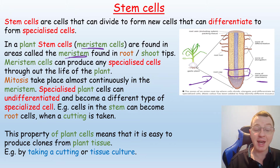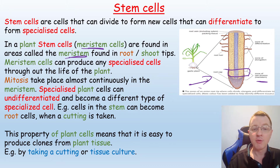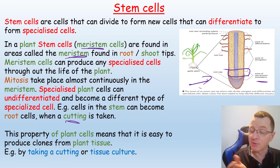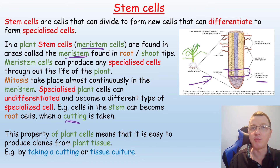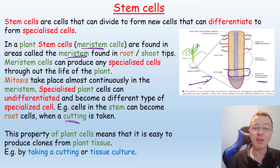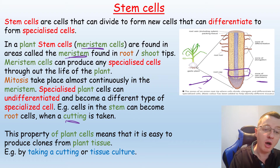Specialised plant cells can also undifferentiate and become a different type of specialised cell. For example, cells in the stem can become root cells when a cutting is taken — by slicing the stem and encouraging the formation of specialised cells through the use of plant hormones such as auxin. This property means it's very easy to produce clones from plant tissue, using methods such as cuttings and tissue culture.